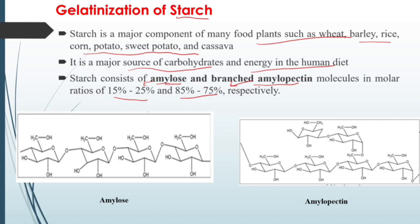Amylose is a linear linkage of alpha glucose units connected by 1,4-glycosidic bonds. Whereas in amylopectin, there is a linear chain with branches connected by 1,6-glycosidic bonds.